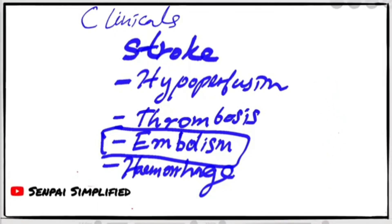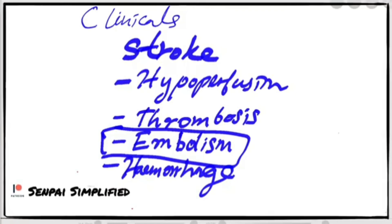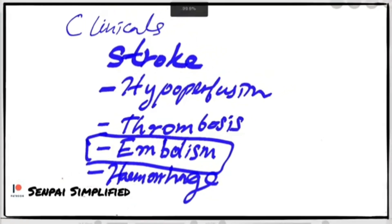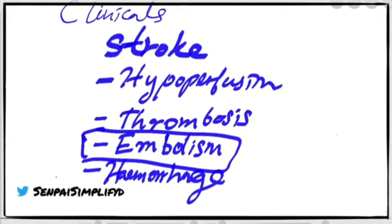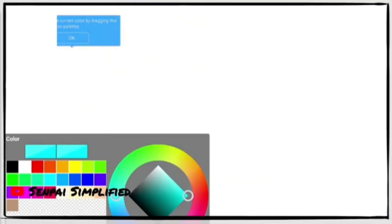The rupture of the aneurysm can cause a hemorrhage. Once the artery wall has ruptured, it is a medical emergency and the patient is likely to die unless treated swiftly. The treatment is always surgical. I hope all of you enjoyed this video and learned something. Thank you for watching.